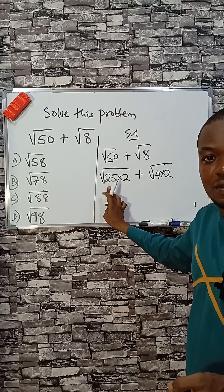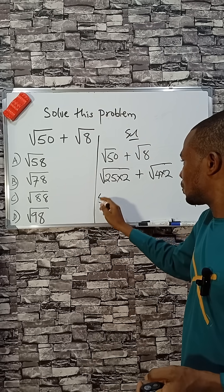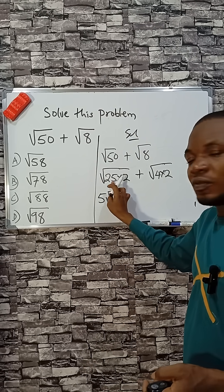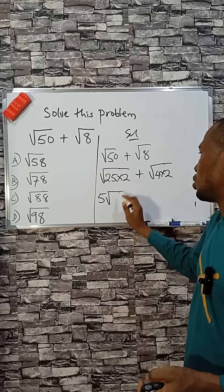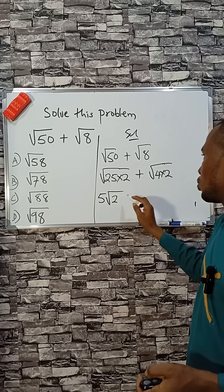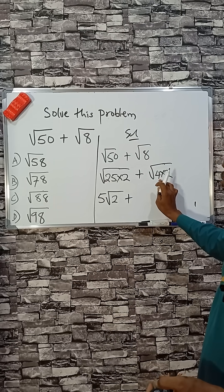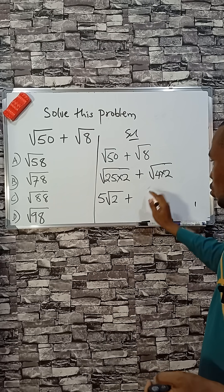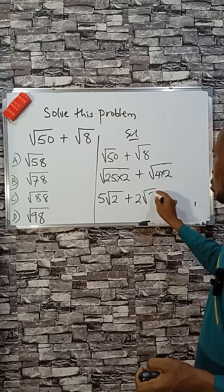The square root of 25 is 5, so we get 5 root 2. The same thing here — the square root of 4 is 2, so we get 2 root 2.